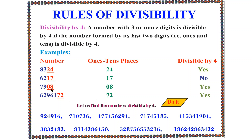The next number is 7908. The 1s and 10s places of this number are divisible by 4, so the whole number is divisible by 4. The last number is 6296172. Its 1s and 10s places give 72, and we know that 72 is purely divisible by 4. Therefore, the whole number is divisible by 4.